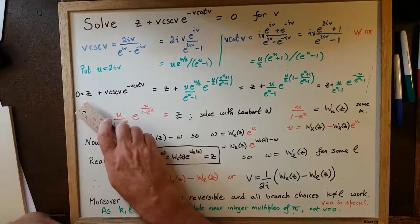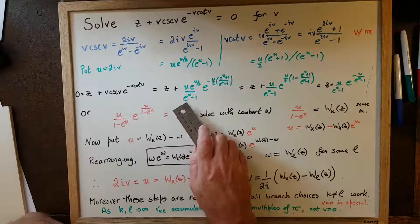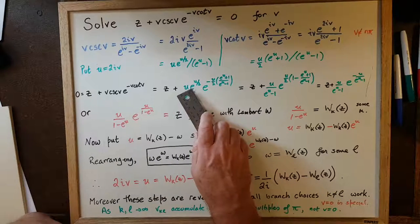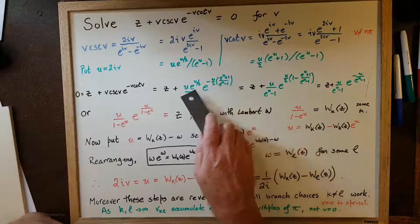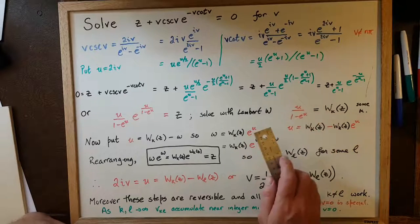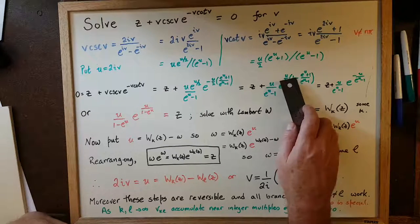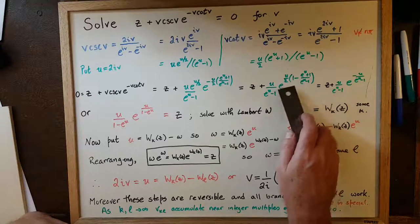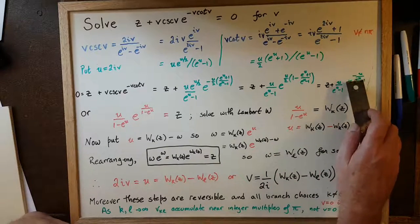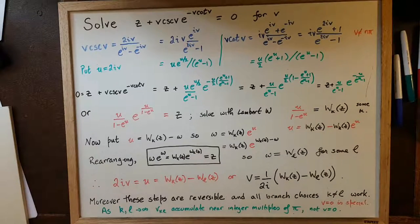Our equation then becomes z plus v cosecant v times e to the minus v cotangent v, which is z plus u e to the u over 2, over e to the u minus 1, times e to the minus u over 2 times the cotangent expression. We pull the e to the u over 2 and e to the minus u over 2 together, getting u over 2 times 1 minus e to the u plus 1 over e to the u minus 1. Simplifying, the numerator becomes e to the u minus 1 minus e to the u minus 1, divided by e to the u minus 1, leaving minus u over e to the u minus 1 — the same form as the cosecant term.